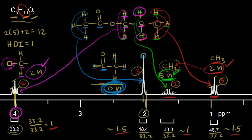Everything makes sense for this ester — chemical shifts and splitting all check out. One common mistake: students sometimes reverse the ester by putting the methyl group on the oxygen side. That's wrong because those methyl protons would be right next to an oxygen, giving a singlet closer to four parts per million — not at two parts per million. Think carefully about chemical shifts when assembling the pieces of an ester.